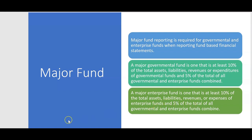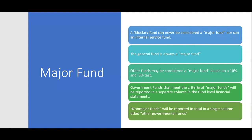A major enterprise fund is one that's at least 10% of total assets, total liabilities, revenues, or expenses of enterprise funds, and 5% of the total of all governmental and enterprise funds combined. Fiduciary funds can never be a major fund — that's a good note to take. Neither can an internal service fund. The general fund is always a major fund. The only proprietary funds that could be major funds are enterprise funds.